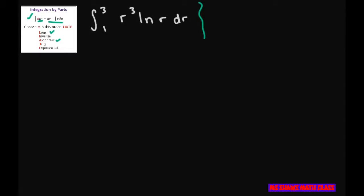So basically, you're going to set it up like U equals ln R and dV equals R cubed dR.